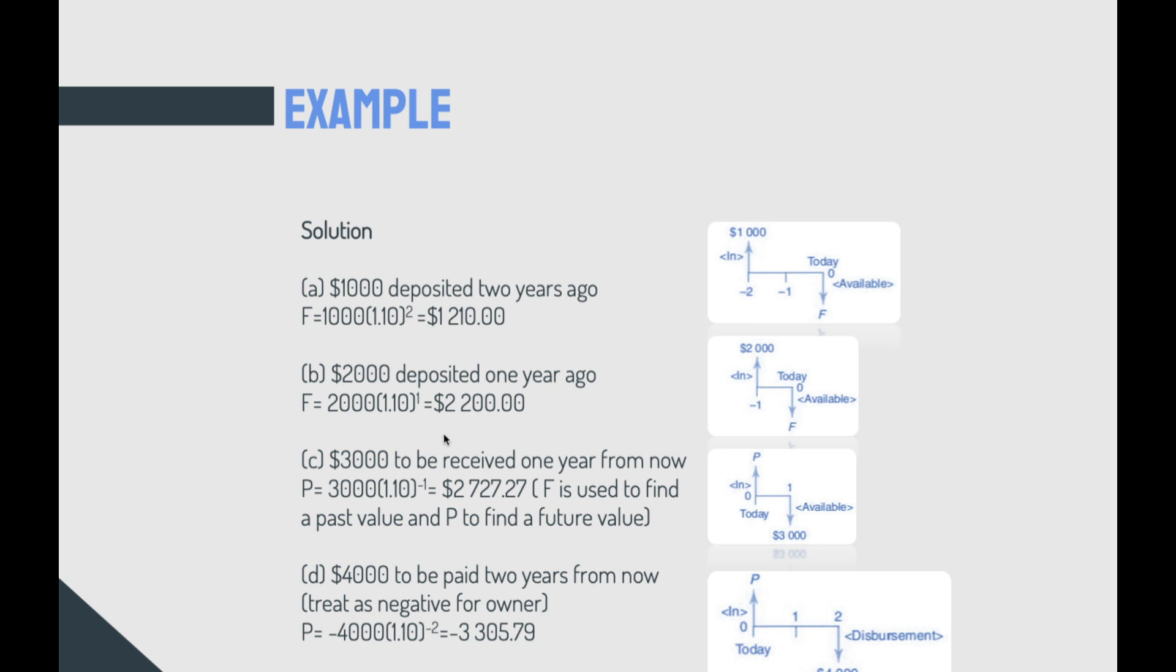Now, we have $3,000 to be received one year from now in the future. In this case, we have P equals $3,000 multiplied by 1.1 to the power of minus 1. In this case, you are looking at your P, not your F, because F is used to find past value. P can be used for future value. There are some exceptions for that, but you can have it as a general rule.